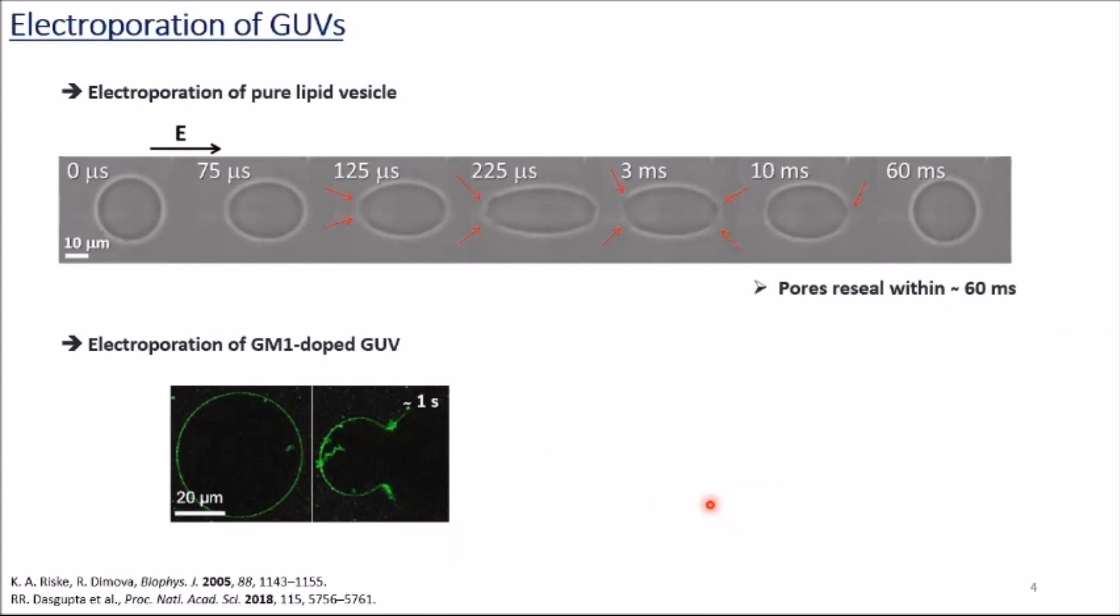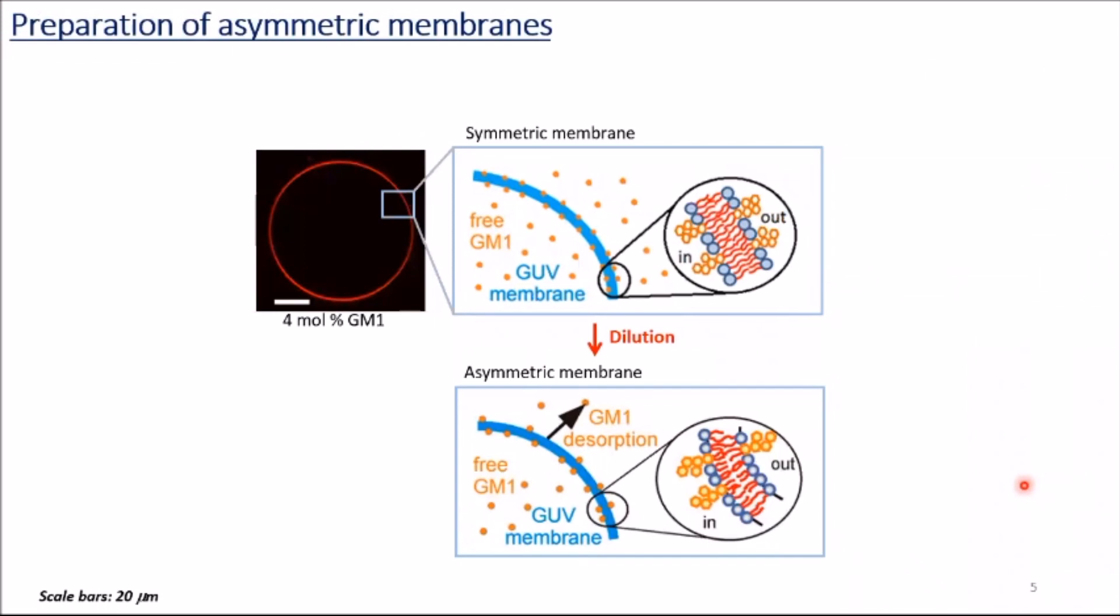The purpose of my project was to understand the reason of these long-lasting pores. It could come from pore closure dynamics, which could be deduced from a material property called edge tension. But before measuring the edge tension, I needed to make these GM1 GUVs asymmetric like they are in cells. So, I diluted the external media and desorbed the GM1 from the membrane.